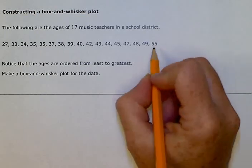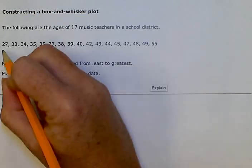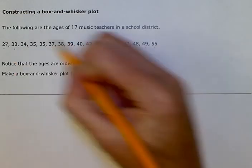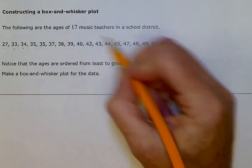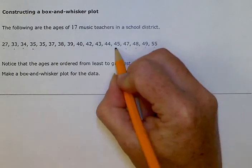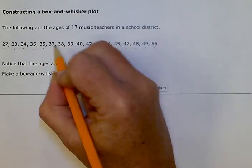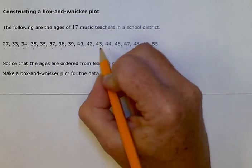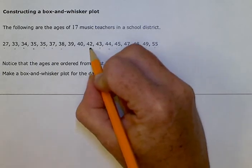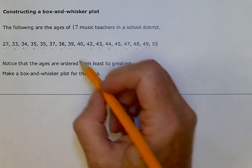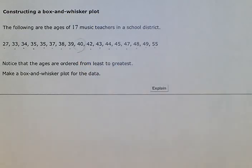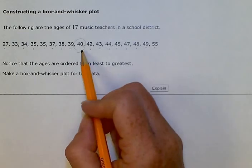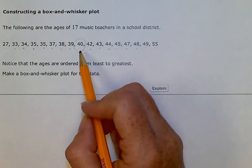So I'm just going to mark off one on each side until I get to the middle. I'm just making a little mark so I can find the middle. A median is either one number if it's odd number or if it's an even number of music teachers, then I would have two numbers in the middle to add together and then divide by two. So since we have 17, that's an odd number, we come up with 40 as our median number. So our median is 40.